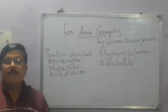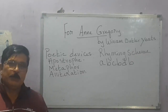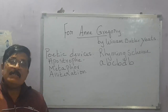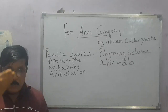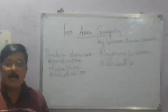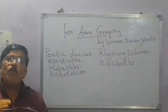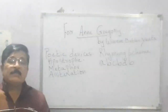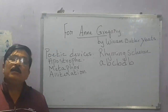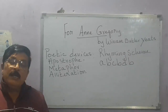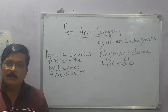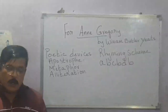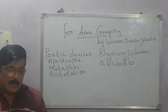'Anne Gregory' is an eighteen-line poem consisting of eighteen lines, and it is in the form of a dialogue — a conversation between two people — the poet and Anne Gregory.